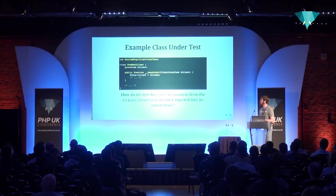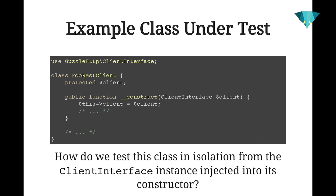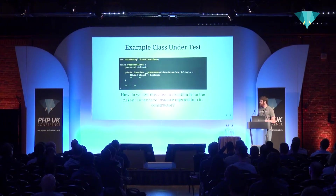Here's an example of a class we might want to test. I'm programming a client for a specific REST service using the Guzzle HTTP client library. I'm injecting an instance of the low-level HTTP client that Guzzle provides into the constructor, and somewhere else in the class I'm using that client to hit the web service. We want to test our class but we don't want to rely on Guzzle's implementation of the interface, because if something in Guzzle changes we could have tests failing all over the place. All we want to know from our unit tests is that the functionality in this class is correct.